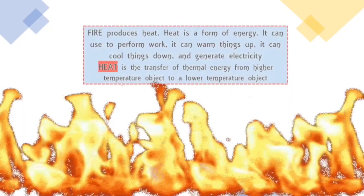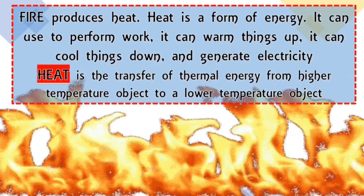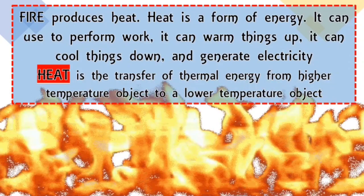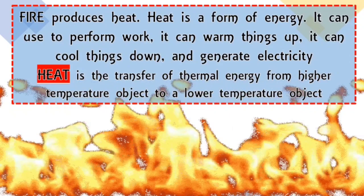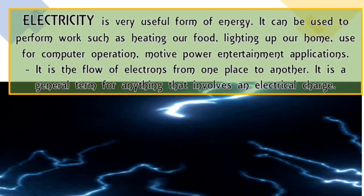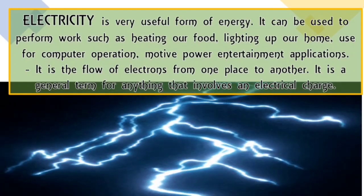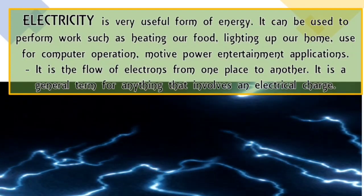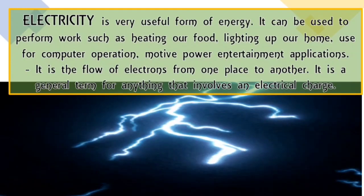Let's define one by one. Fire produces heat. Heat is a form of energy. It can be used to perform work. It can warm things up, it can cool things down, and generate electricity. Heat is a transfer of thermal energy from a higher temperature object to a lower temperature object. While electricity is a very useful form of energy — it can be used to perform work such as heating our food, lighting up our home, use for computer operation, and motive power entertainment applications. Electricity is also the flow of electrons from one place to another.